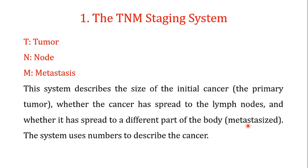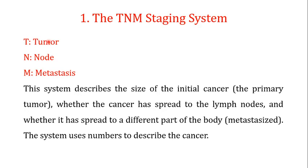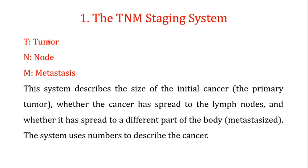The T refers to the size of the cancer and how far it has spread into nearby tissue. It can have a value of 1, 2, 3, or 4 — with 1 being small and 4 being large. So T1 means you are dealing with a small tumor, and T4 means you are dealing with a very large tumor. The N refers to whether the cancer has spread into the lymph nodes, and can be between 0 and 3: 0 means no lymph nodes contain cancer cells, and 3 means a lot of lymph nodes contain cancer cells.